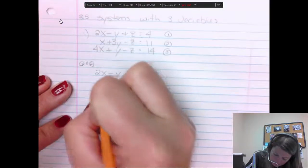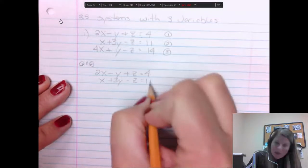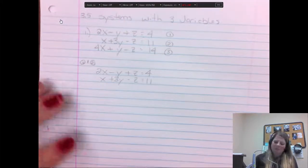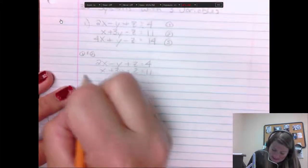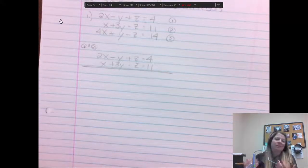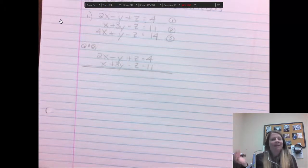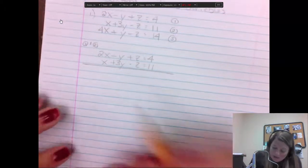I also could have easily eliminated the y's or a different letter. I am just looking at the z's because they're all ones and they have plus and negative. So let's pair one and two together. So one and two. So we're just going to write those down and we're going to eliminate the z's.